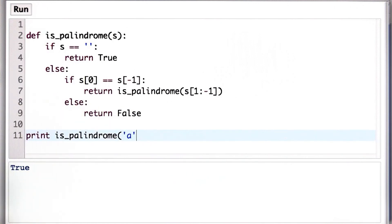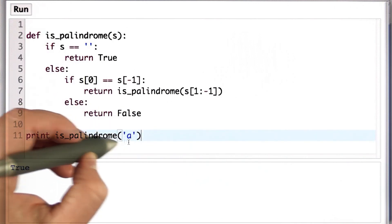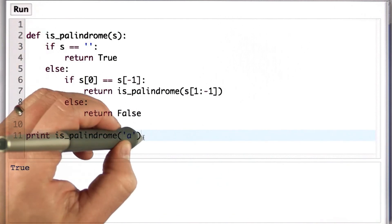Let's try the single letter string a. That's also a palindrome. It reads the same backwards and forwards. And so we also get the value true.